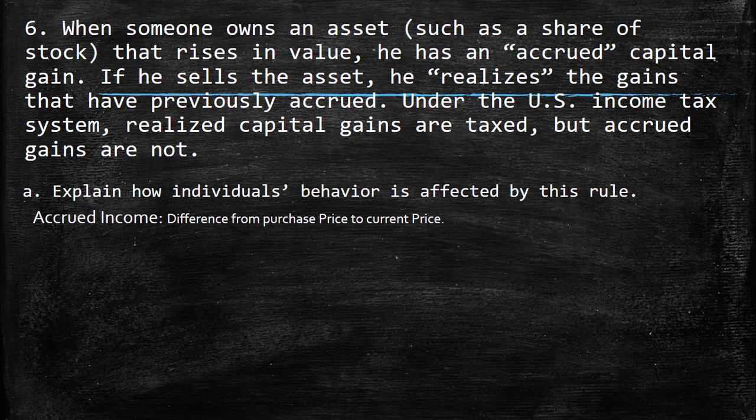For example, you bought an Apple stock for $10 and currently the accrued value is $15. So it means that this gain of $5 is the money that you have gained, but you haven't sold the asset yet. For this reason, it's not yet realized.